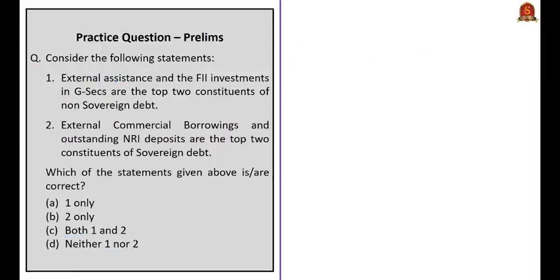Third question: consider the following statements. Statement one: external assistance and foreign institutional investments in government securities are the top two constituents of non-sovereign debt. Statement two: external commercial borrowings and the outstanding NRI deposits are the top two constituents of sovereign debt. Both these statements look correct, but be careful — sovereign and non-sovereign are interchanged here. External assistance and FII in government securities are constituents of sovereign debt, while ECBs and outstanding NRI deposits are constituents of non-sovereign debt. So both statements are incorrect, and the correct answer is option D, neither one nor two.